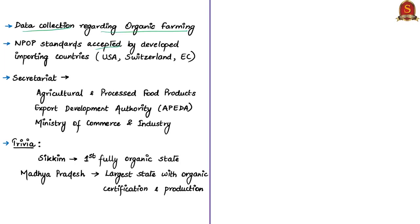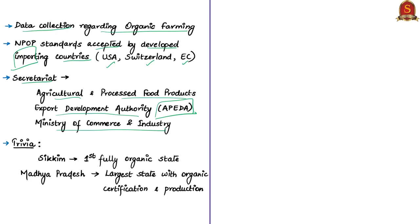These standards are now accepted by developed countries that import India's organic products, including USA, Switzerland, and the European Commission. The Agricultural and Processed Food Products Export Development Authority, APEDA, functions as the secretariat for the implementation of NPOP. APEDA comes under the Ministry of Commerce and Industry. When studying about organic farming, also note that Sikkim is the first fully organic state — its entire cultivation is organic without any fertilizers or pesticides. Madhya Pradesh is the largest state which produces organic products and also holds the largest organic certification.